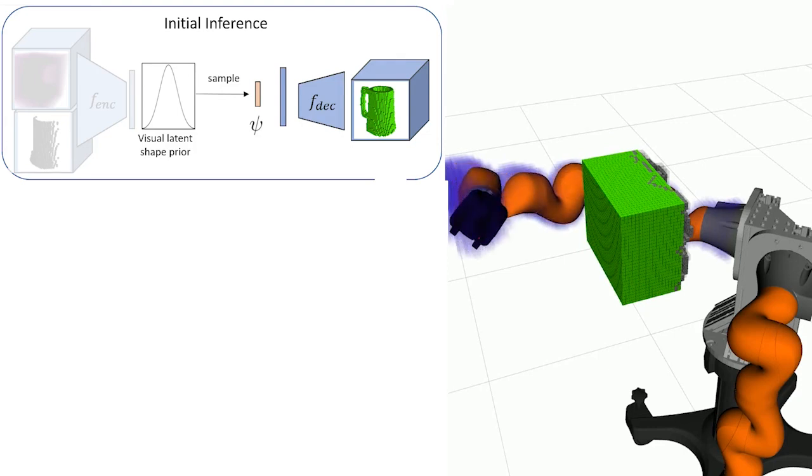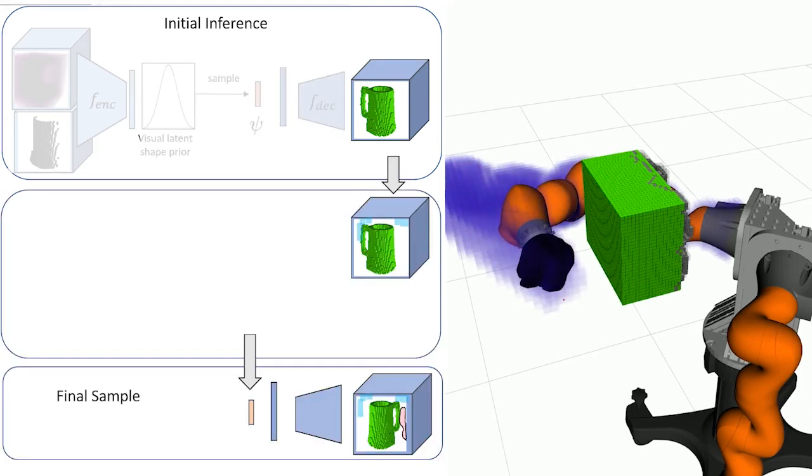The robot then moves, sweeping out known free space. Most of the samples are consistent with this new information. However, sometimes we must update the sample to make it feasible.